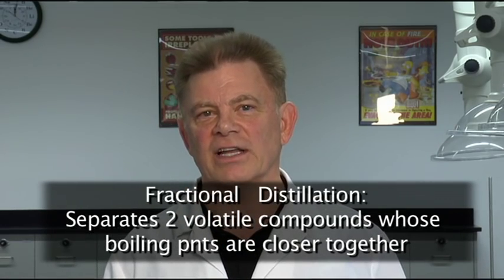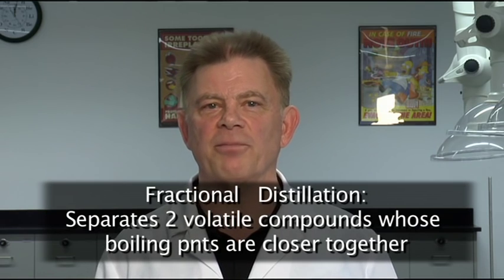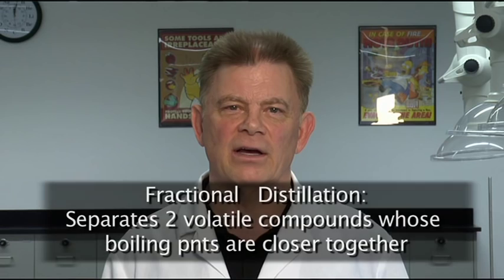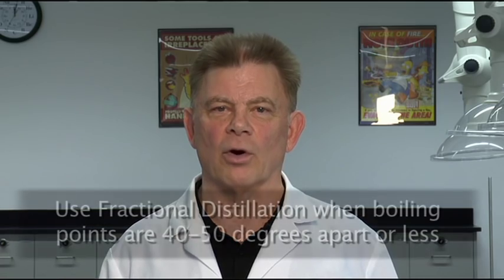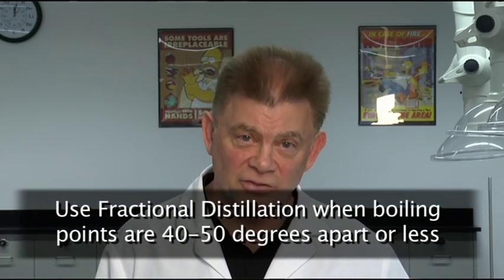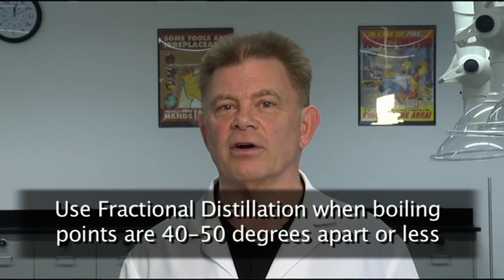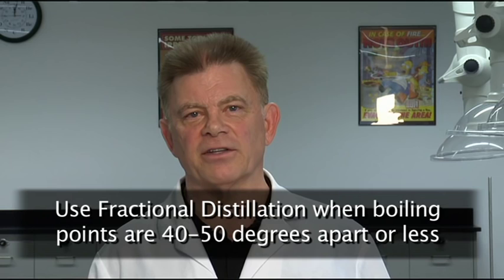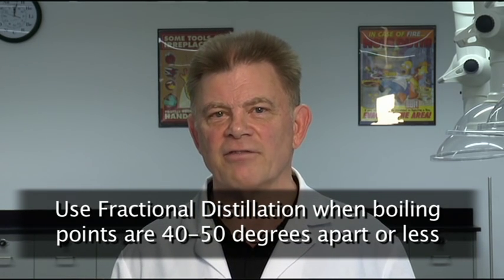In a fractional distillation, we have two volatile compounds whose boiling points are relatively close together, and that means within 40 or 50 degrees of each other. You probably want to use 40 or 50 degrees or less, you want to use a fractional distillation over a simple distillation. In our laboratory, in our experiment, we're going to separate toluene, which has a boiling point of 111 degrees, from cyclohexane, which has a boiling point of 81 degrees. So the difference in temperature between those two boiling points is around 30 degrees, so we need to do a fractional distillation.